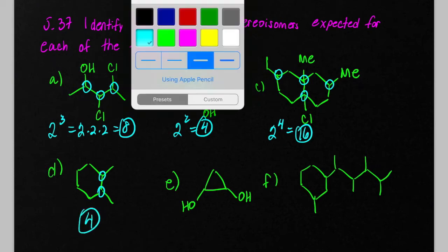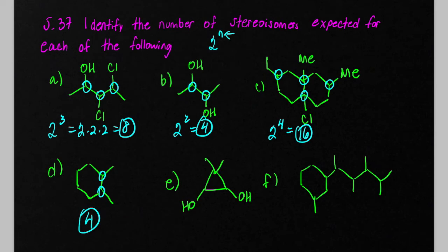In problem E, I copied this incorrectly—there's two methyl groups on that carbon. That is not a stereocenter because it does not have four different groups attached to that carbon. So what we have are just two stereocenters for a maximum total of four stereoisomers that we would expect.